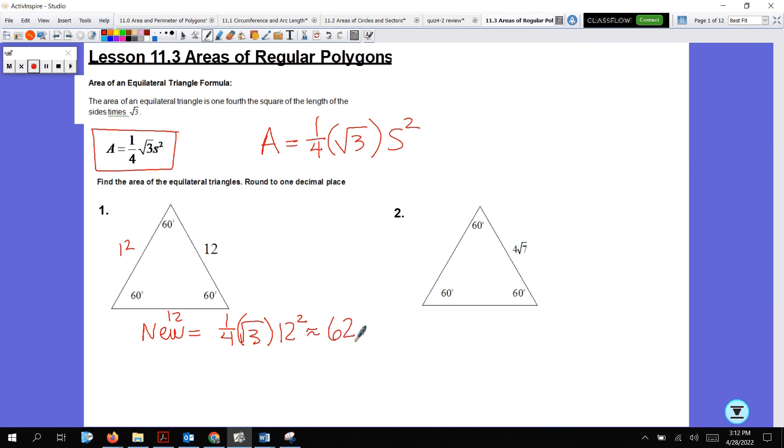So, new is one-fourth root 3 side squared, and it's showing you close off that radical with the parentheses before you plug in 12. I'm going to get 62.4 inches squared. If we use the old method, remember, the old method is one-half base times height. Well, I know what the base is, but I don't know the height. If I draw the height in here, it bisects this triangle. So this is going to be 30-60-90.